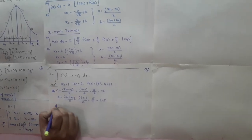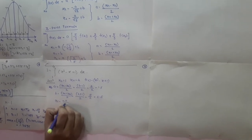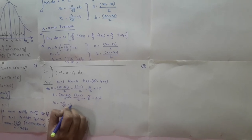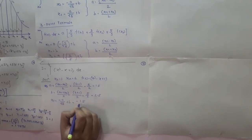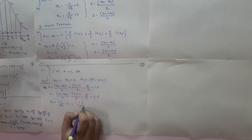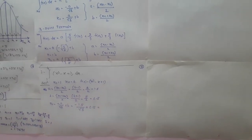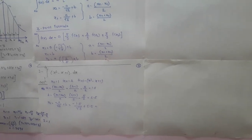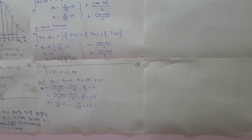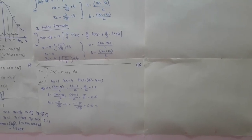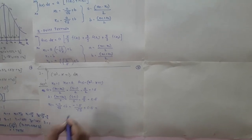Now we will evaluate the value of x1. x1 equals minus a divided by root 3 plus b. Substituting the values: minus 1.5 divided by root 3 plus 2.5. The value of x1 is 1.6339.